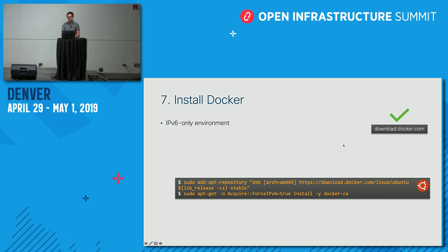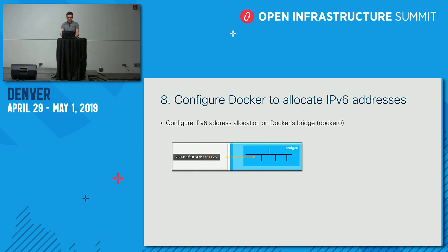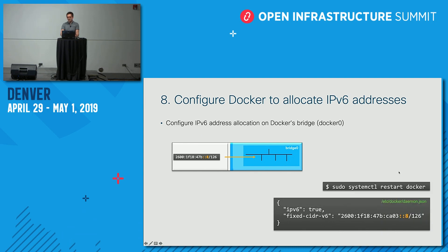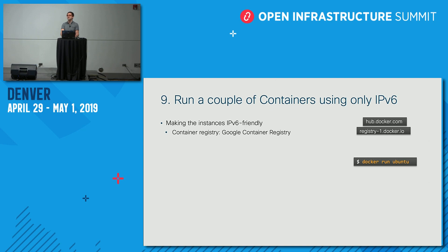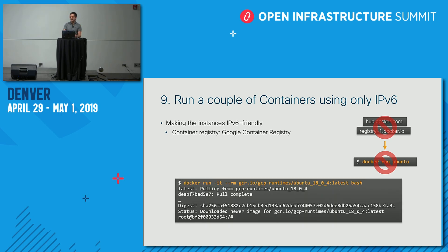Now install Docker — docker.com does support IPv6, so the download works. Configure Docker by specifying the IPv6 block to use for container address allocation — the /126 we chose at the beginning — by modifying the Docker config and restarting the Docker daemon. If you just run 'docker run ubuntu' it will fail because Docker Hub does not support IPv6, so you need an alternative. The Google Container Registry does support IPv6, which is what I used to pull the Ubuntu container image.